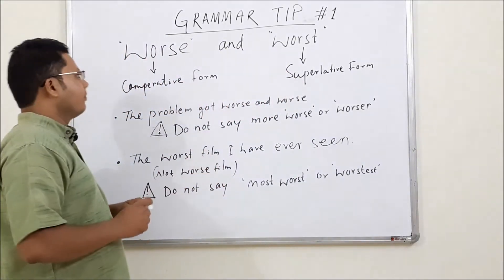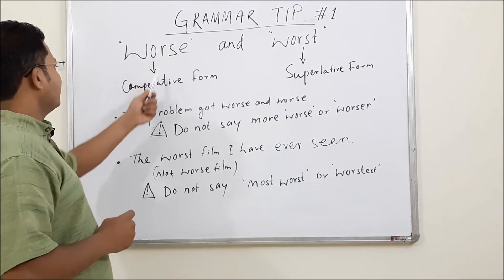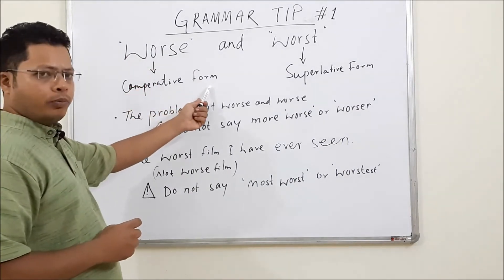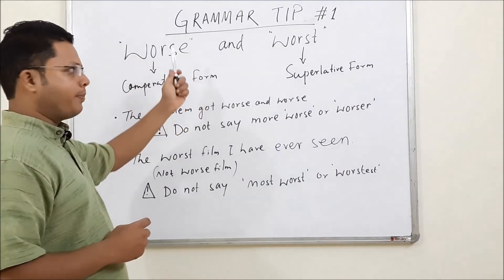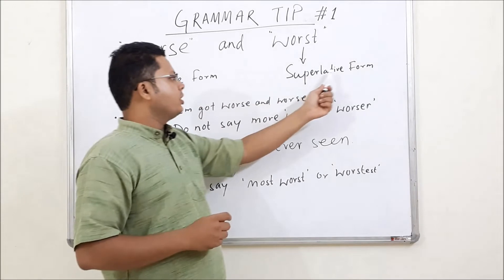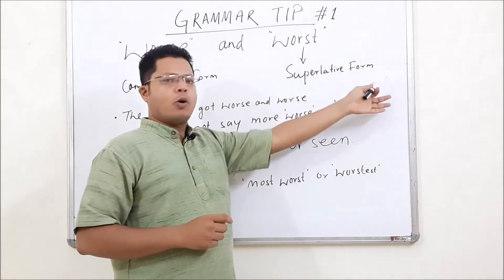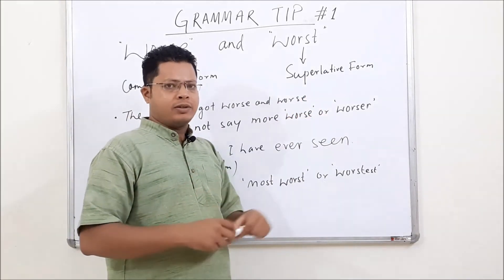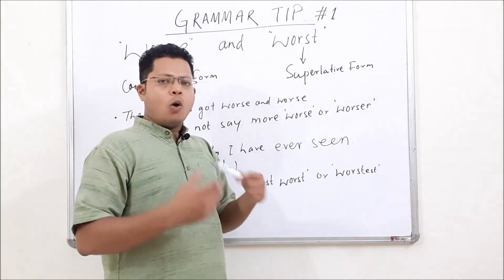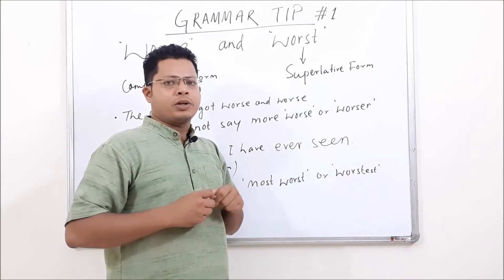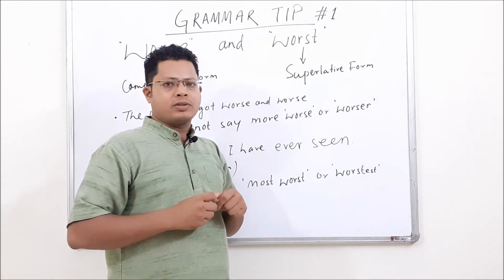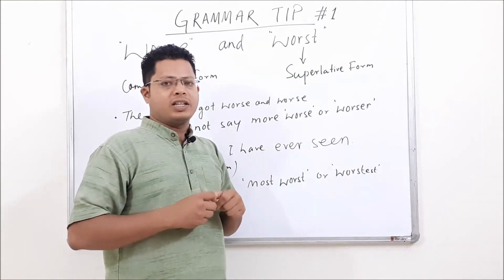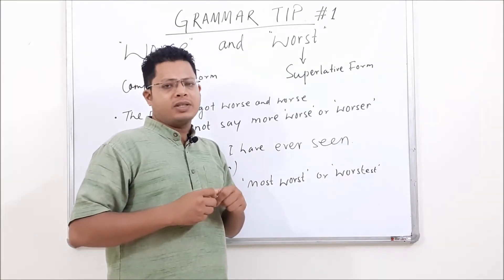It's very easy. 'Worse' is the comparative form of 'bad,' and 'worst' is the superlative form of 'bad.' But how do we use them in English sentences so that you do not commit any silly mistakes?